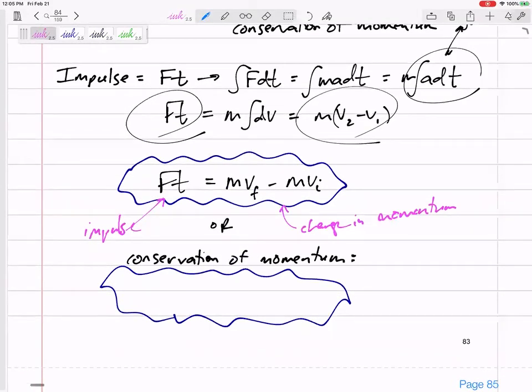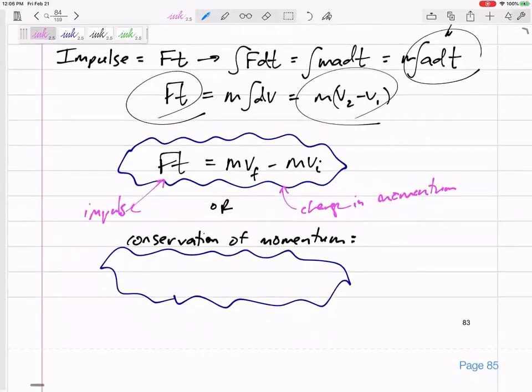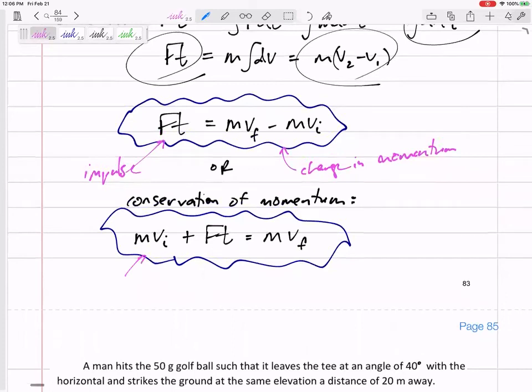We can rearrange this. An impulse is equal to change in momentum - does that make sense? If you put an impulse on an object, you change its momentum. A collision changes the velocity of an object. Or bring this over to the left: the initial momentum plus any impulse that we add equals the final momentum. Let's write this in words: the initial momentum of the system...